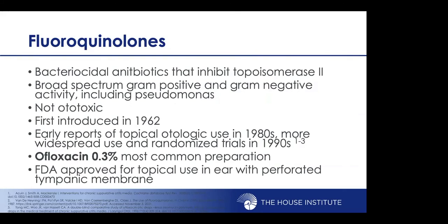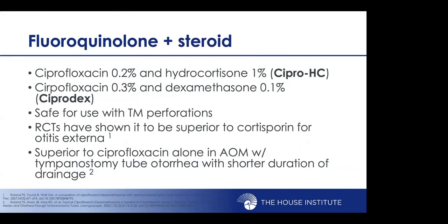Fluoroquinolones were first introduced in 1962, with early reports of topical ear use in the 1980s and widespread use in randomized trials in the 1990s. Ofloxacin 0.3% is the most common preparation, and fluoroquinolones are FDA-approved for topical middle ear use as they are not ototoxic. Adding a steroid in the form of Cipro HC or ciprofloxacin-dexamethasone (Ciprodex) has been shown to be superior to cortisporin or antibiotics alone in treating otitis externa and tympanostomy tube otorrhea. Ciprodex is currently favored and provides faster symptomatic relief.